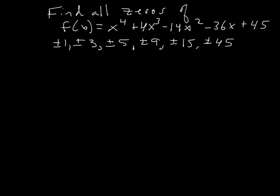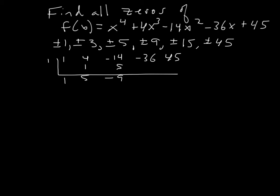Let's start simple with x=1. Synthetic division with coefficients 1, 4, −14, −36, 45: dropping down gives 1, 5, −9, −45, and remainder 0. We got lucky right off the bat! So x=1 is one of the answers, and now we're down to a cubic. Never look back at the original — keep breaking down the powers.